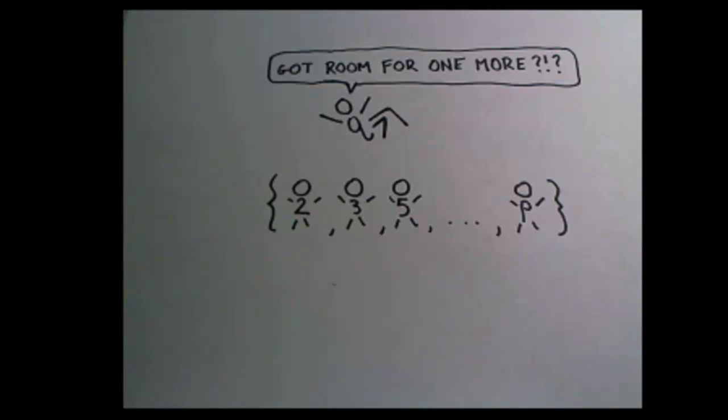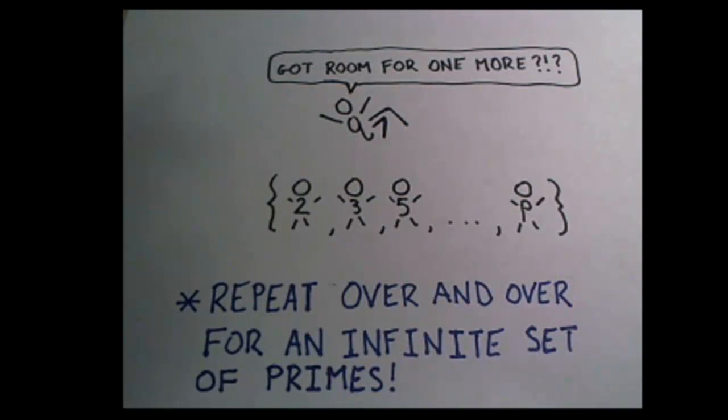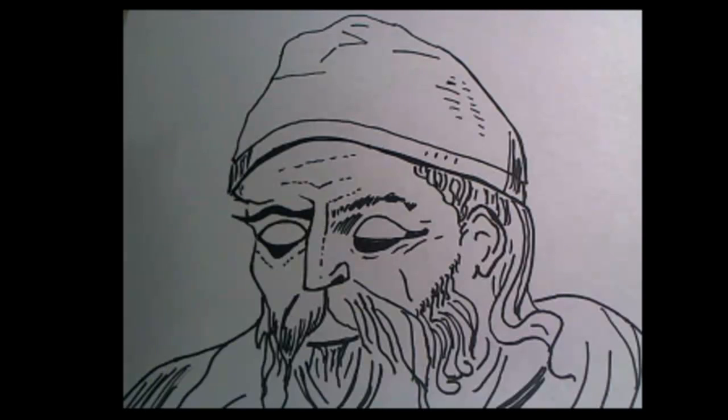Now if we claim this is the true complete finite list of primes, let's repeat the process and we'll get another prime. Done repeatedly, this proves there are an infinite amount of prime numbers. Euclid was a pretty smart guy.